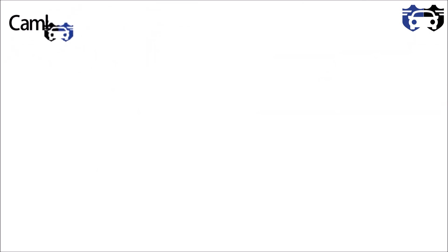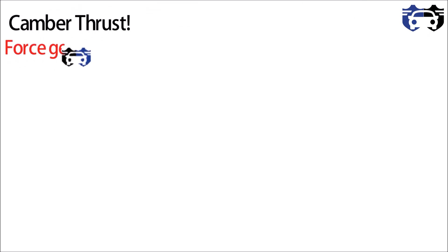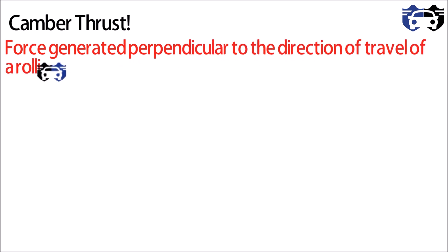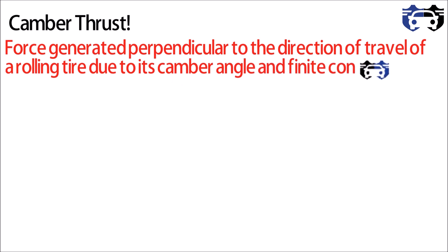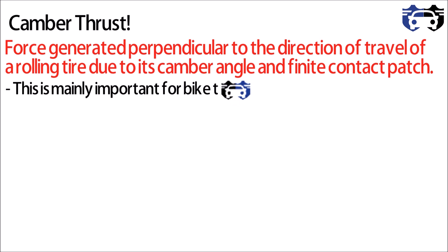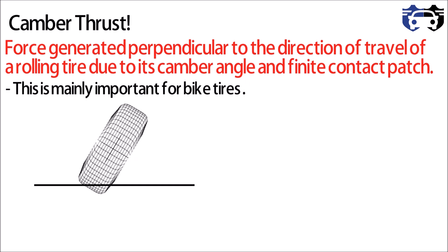The second phenomenon is camber thrust — the force generated perpendicular to the direction of travel of a rolling tire due to its camber angle and finite contact patch. This force is also caused by road camber. It is mainly important for bike tires, and for car tires it matters when they make different camber angles due to road camber.